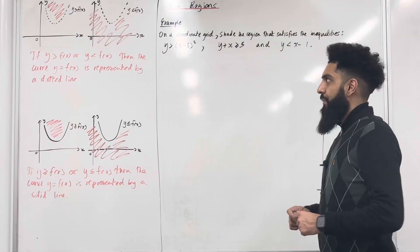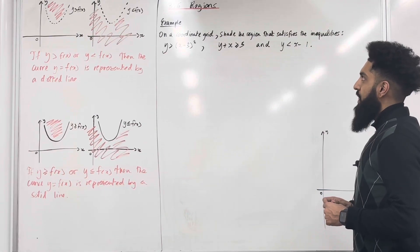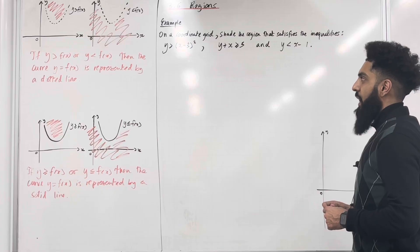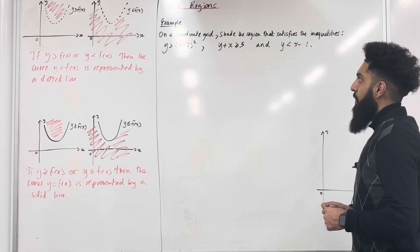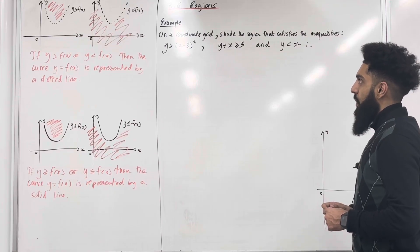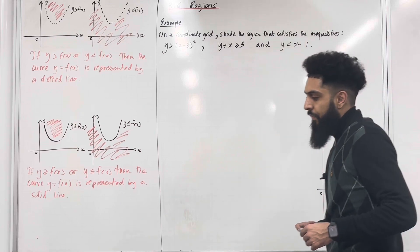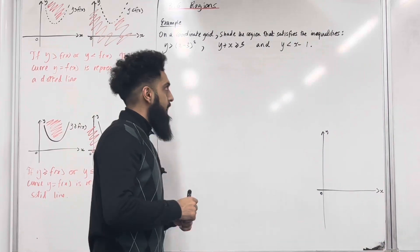Let's have a look at an example. On a coordinate grid, shade the region that satisfies the inequalities: y is greater than x minus 3 in bracket squared; y plus x is greater than or equal to 5; and y is less than x minus 1.